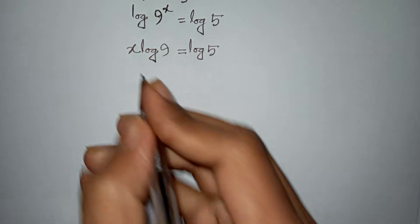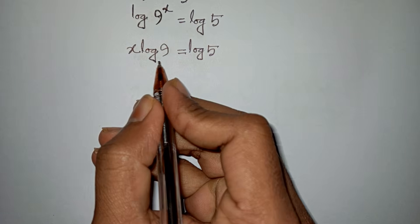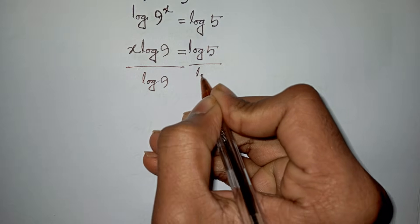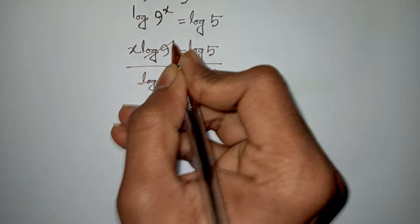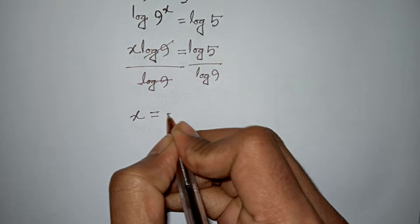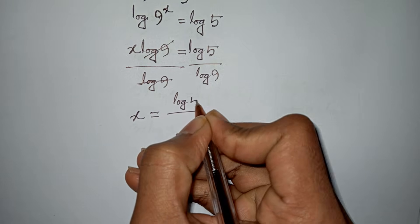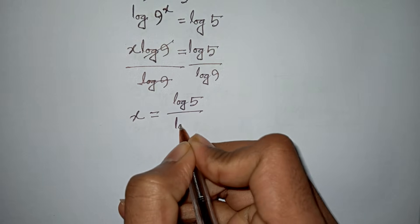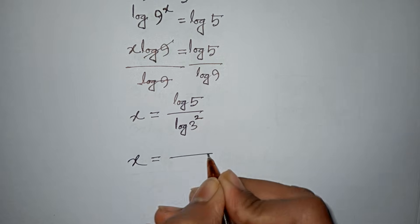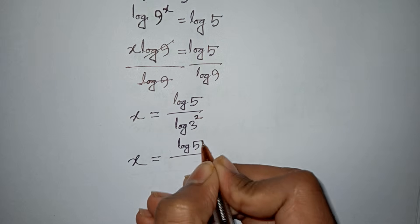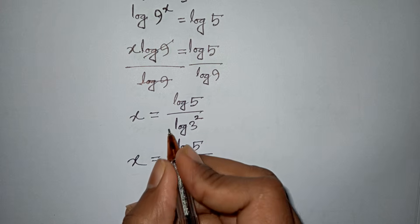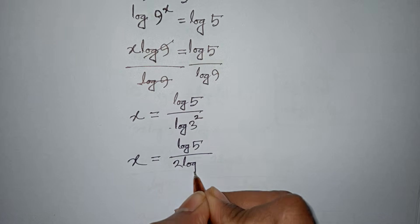Now we need the value of x, so we divide both sides by log 9. The log 9 terms cancel, and we have x equal to log 5 over log 9. Since 9 is the same as 3 squared, log 9 equals 2 log 3.